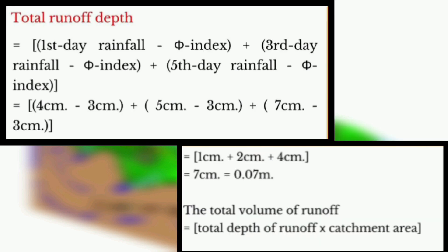First, we need to know what is phi-index. Phi-index is the constant infiltration of rainwater that yields the actual runoff volume of the total rainfall water. Rainfall rates equal to or less than phi-index do not provide any volume for the runoff, hence they are not taken while calculating runoff.